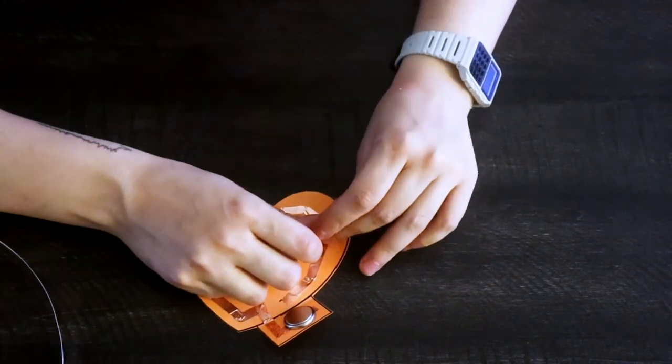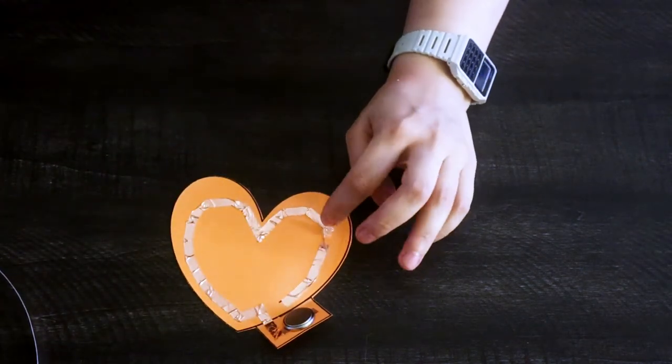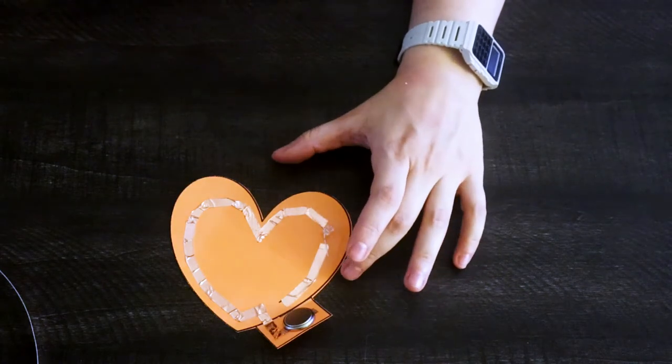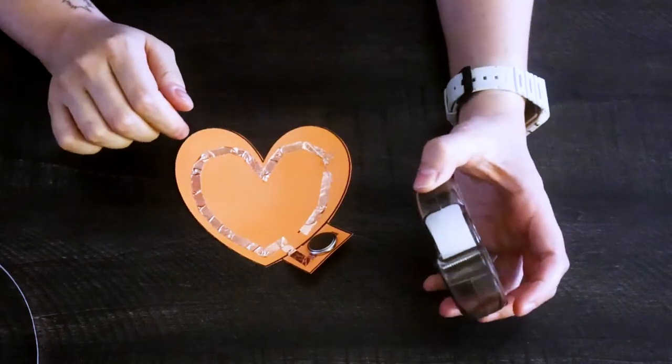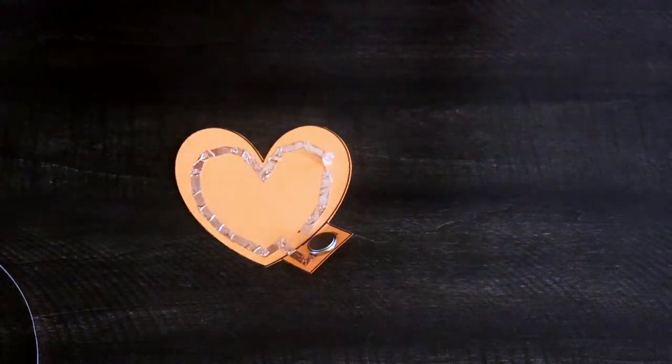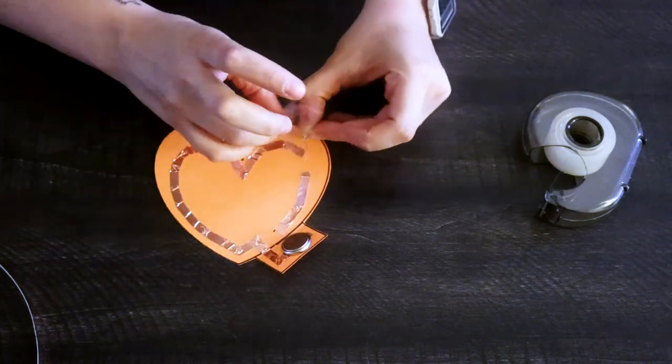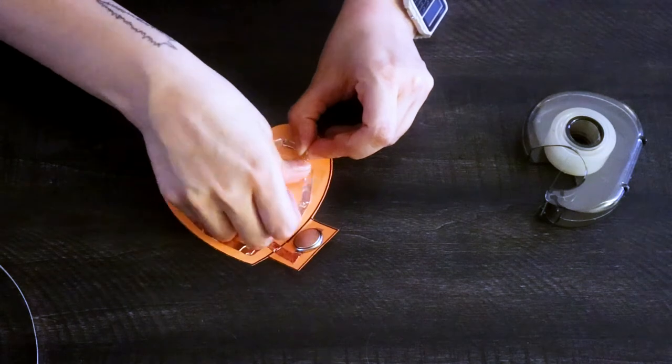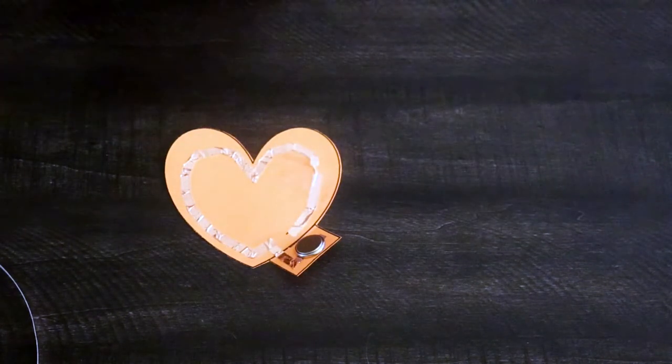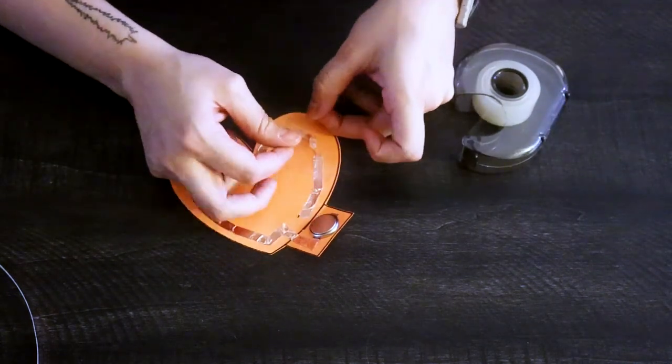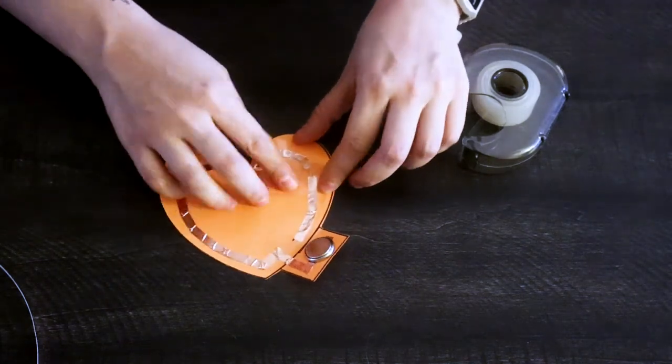I am actually going to grab some scotch tape and tape this down right here so that it stays a little bit better because it doesn't stay very well right now. It took me a while to find the scotch tape, but that's okay. So now I'm going to bend this so it stays here. If I wanted to color it, I'd probably color it before I put this tape on since we all know that scotch tape isn't the easiest thing to color over. So if I was going to make this a card for someone, probably write in it first.